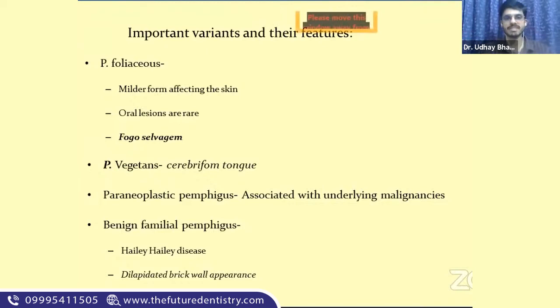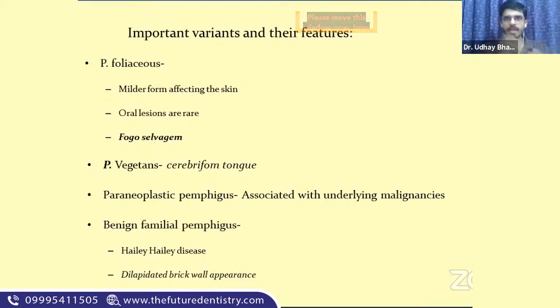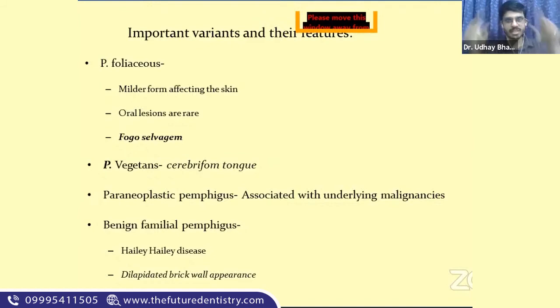Pemphigus vegetans is another relatively mild form of pemphigus associated with an oral manifestation called cerebriform tongue. This is characterized by deep fissures or grooves on the surface of the tongue that resemble the gyri or sulci of the brain, occurring alongside the blistering lesion. A memory aid: pemphigus vegetans — vegetable — cauliflower, whose surface also looks cerebriform.